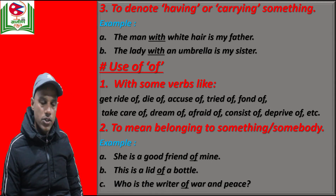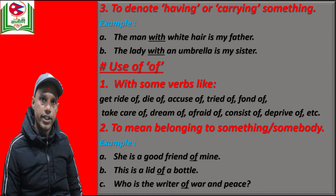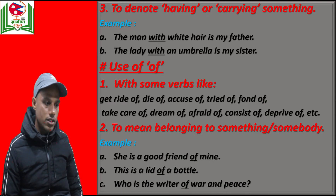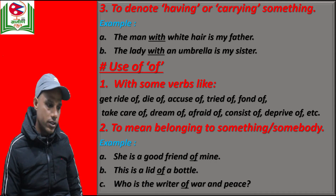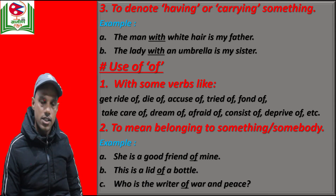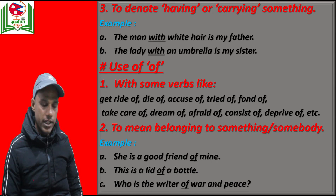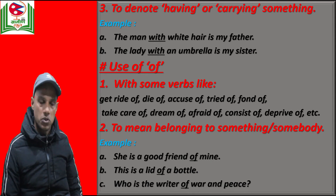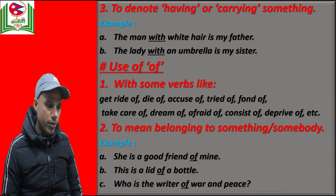Now we will learn about the use of preposition 'of'. The first condition is with some verbs like: get rid of, die of, accuse of, tired of, fond of, take care of, dream of, afraid of, consist of, deprived of. These are some verbs with which preposition 'of' is used, and there may be other examples to explore. The next condition is to mean belonging to something or somebody. For example: she is a good friend of mine. This is a lid of a bottle. Who is the writer of War and Peace?